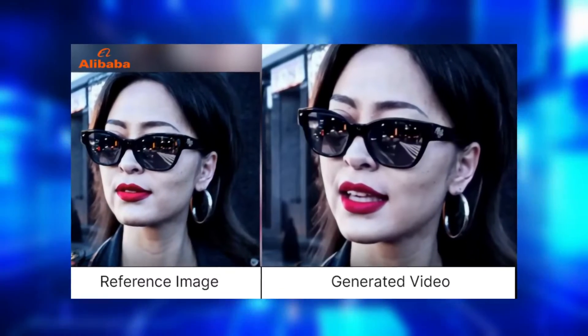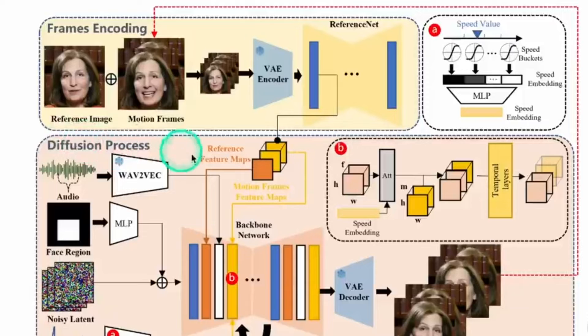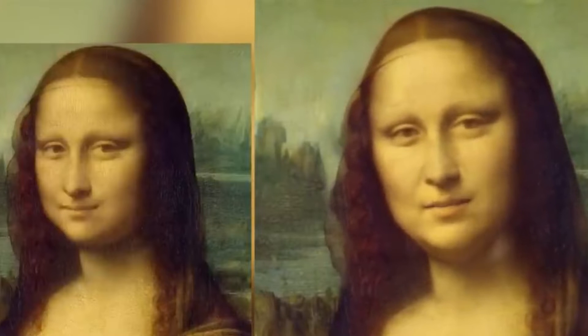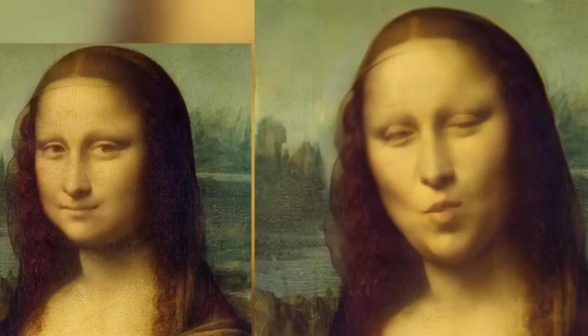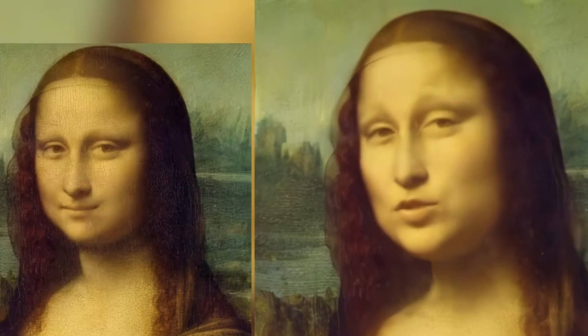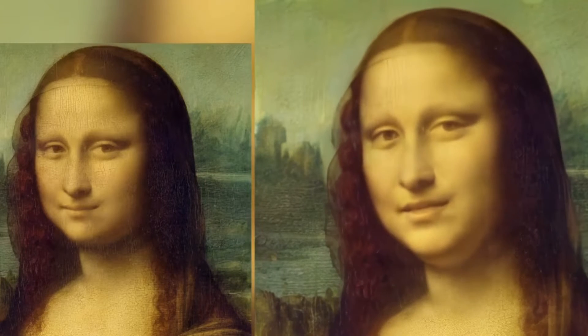But Emo AI takes a different approach. It directly synthesizes videos from audio cues, ensuring smooth transitions between frames and maintaining a person's identity throughout. This results in animations that are not only expressive, but also remarkably realistic. One of the most impressive aspects of Emo AI is its ability to capture a wide range of facial expressions. By analyzing audio cues, it can generate dynamic facial movements that accurately reflect the emotions conveyed in the audio. From subtle smiles to intense frowns, Emo AI can recreate the full spectrum of human emotions with remarkable accuracy.